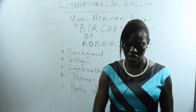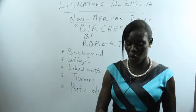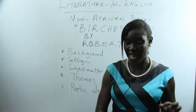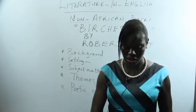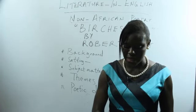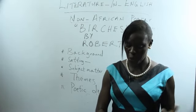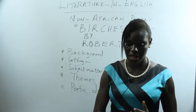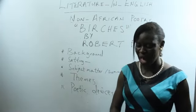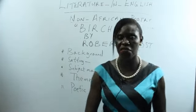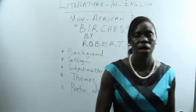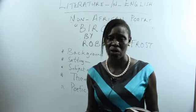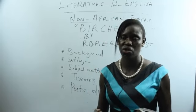He knows that the bending of the tree branches has been caused by ice, and as a result of the weight of ice on the branches, the poet climbing the birch means freedom. The act of swinging on the birches is presented as a way of escaping the hard reality of life.